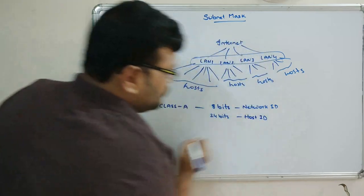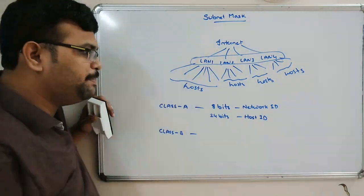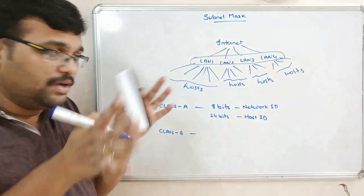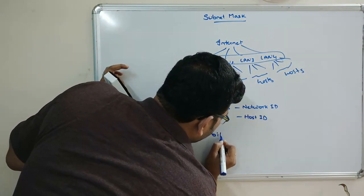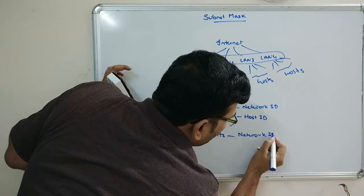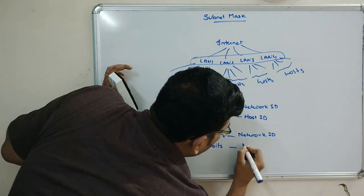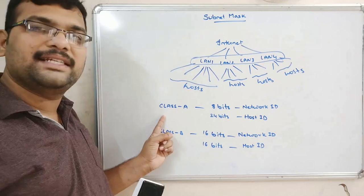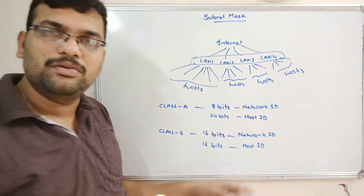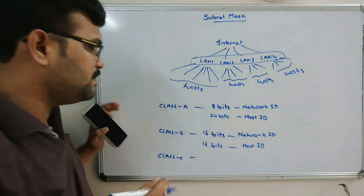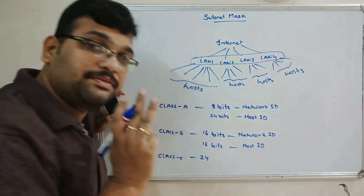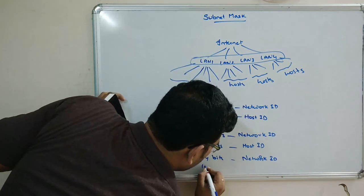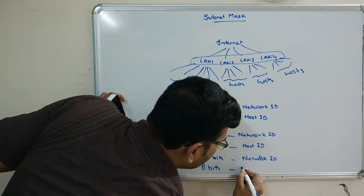For class B, the first two octets are considered the network ID and the last two octets are used for the host ID — so 16 bits for network ID and 16 bits for host ID. For class C, the first three octets — that is 24 bits — are used to represent the network ID, and the remaining 8 bits represent the host ID.